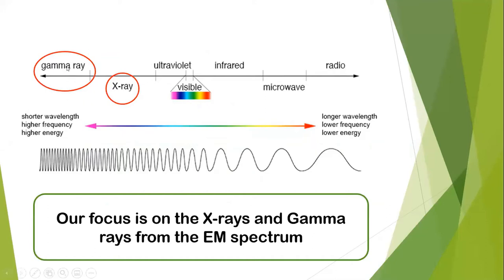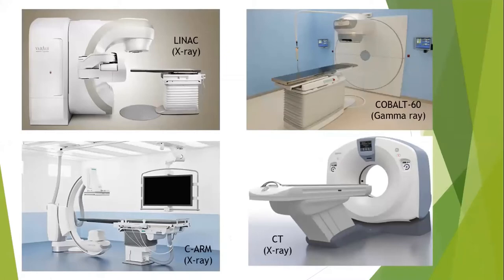Our focus on the electromagnetic spectrum is on x-ray and gamma ray. These particles have shorter wavelengths, higher frequency, and higher energy. On the other side we see longer wavelength, lower frequency, and lower energy. The further you move away from your radiation source, the lower the dose. Our focus will be on x-ray and gamma ray from the EM spectrum.